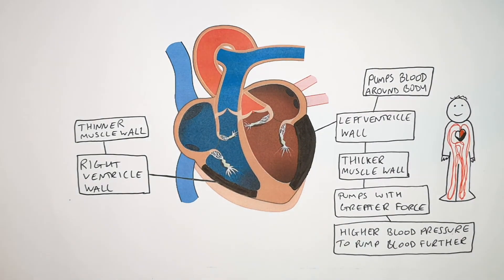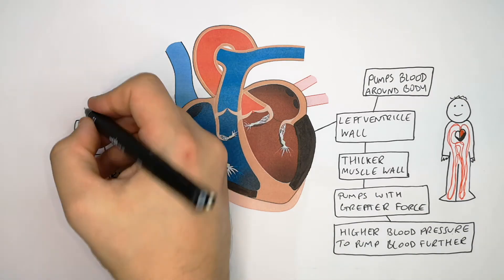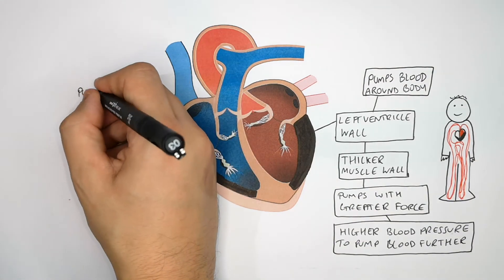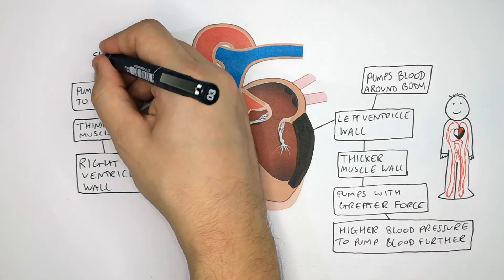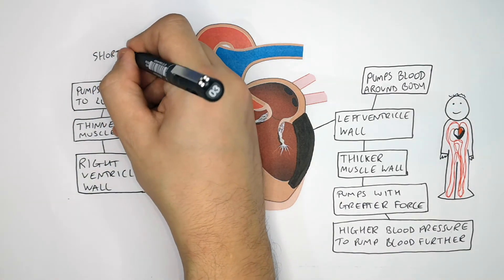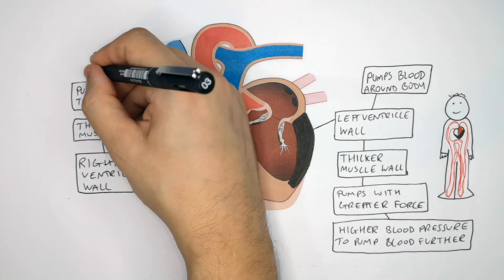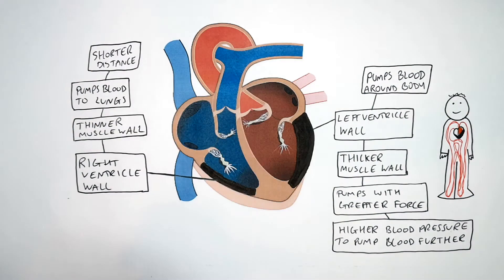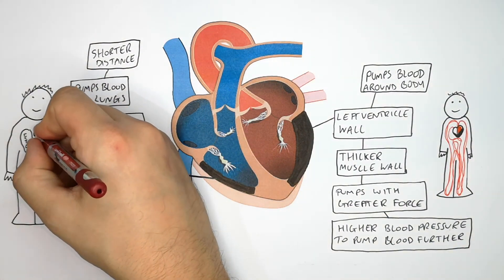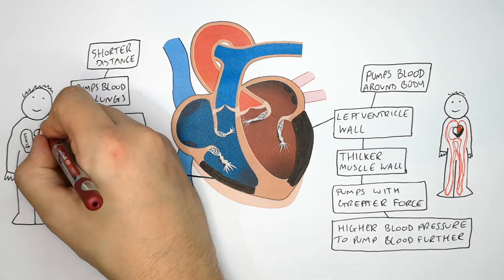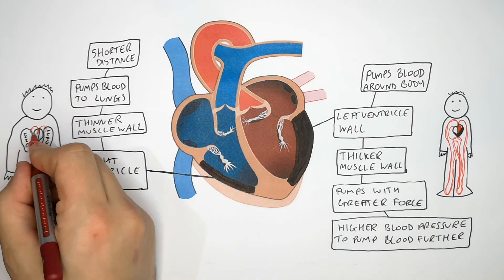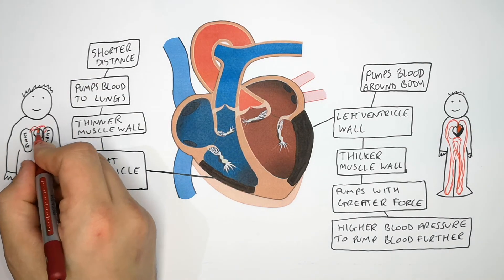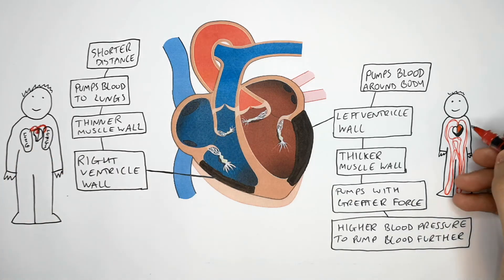The right ventricle wall has a thinner muscle wall because it only pumps blood to the lungs. It needs to pump blood a shorter distance than the left ventricle, so it can be thinner. Remember, the right ventricle wall is a thinner muscle wall because it pumps blood a shorter distance to the lungs, requiring a lower force and lower blood pressure.